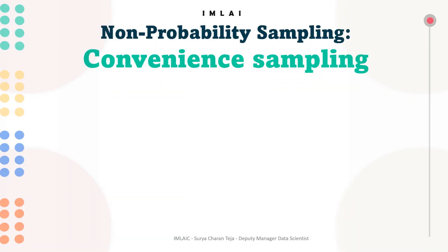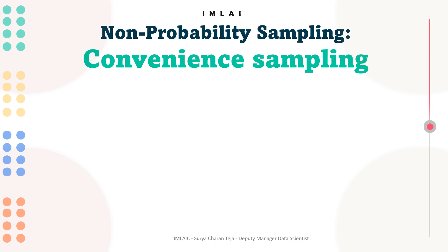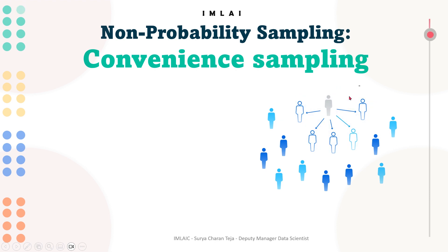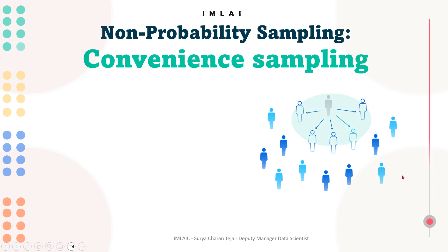Now let's look into the first technique under non-probability sampling, which is convenience sampling. Convenience sampling is a non-probability sampling technique in which samples are selected based on their availability and accessibility to the researcher. Here is your researcher, these are your elements of interest, and these are your respondents which are part of your survey.